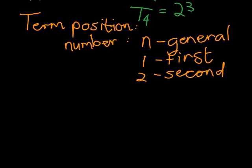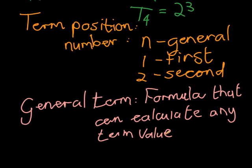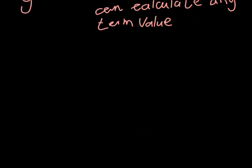The next thing is the general term. The general term refers to a formula that can calculate any term value, and all we need is the term number. Let's look at an example.